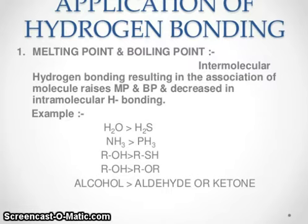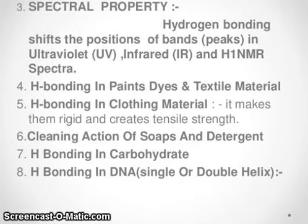A covalent bond is represented by a solid line. You can see here F-H...F-H, where there is a dotted line between hydrogen and fluorine — this is the hydrogen bond. Hydrogen bond is weaker compared to the covalent bond. Hydrogen bond energy is only 2 to 10 kilocalories per mole, compared to covalent bond energy of 50 to 100 kilocalories per mole.